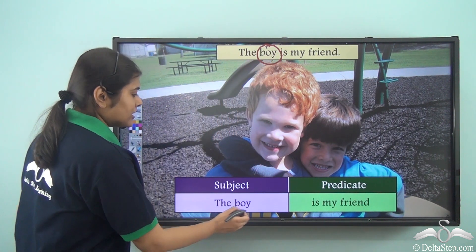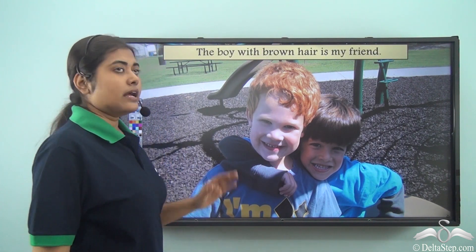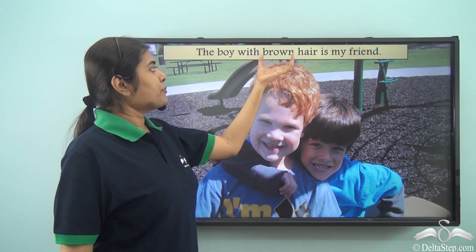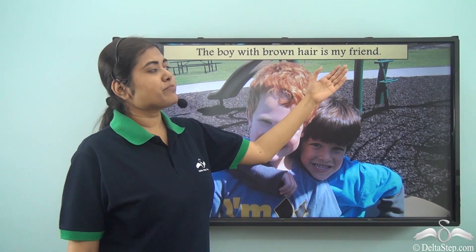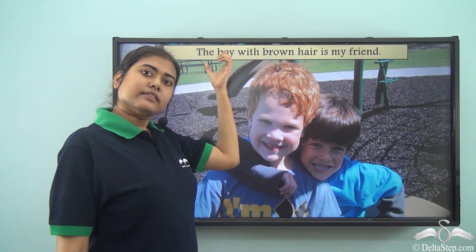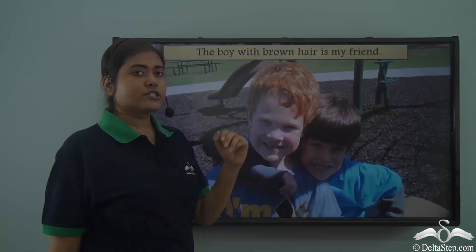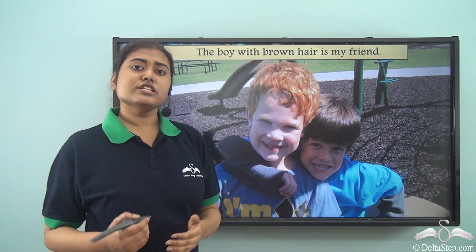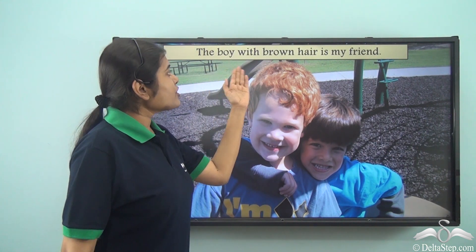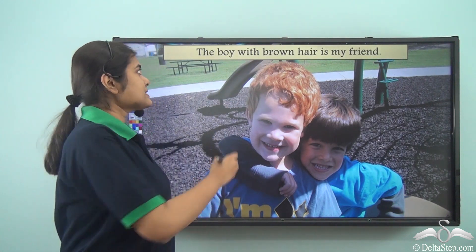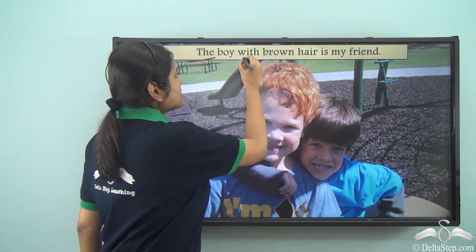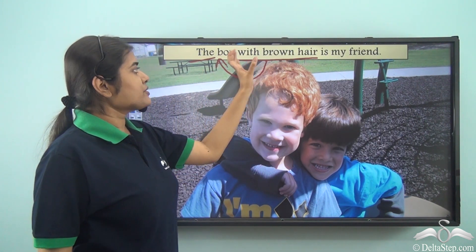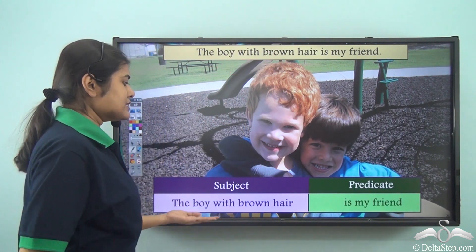Now consider: 'The boy with brown hair is my friend.' We've added the phrase 'with brown hair.' If I ask who is my friend, the answer is the boy — but not just any boy. The boy with brown hair is my friend. So the noun 'boy' has not only the article modifier but also the phrase 'with brown hair' describing it. Therefore, 'the boy with brown hair' altogether becomes the subject of the sentence.